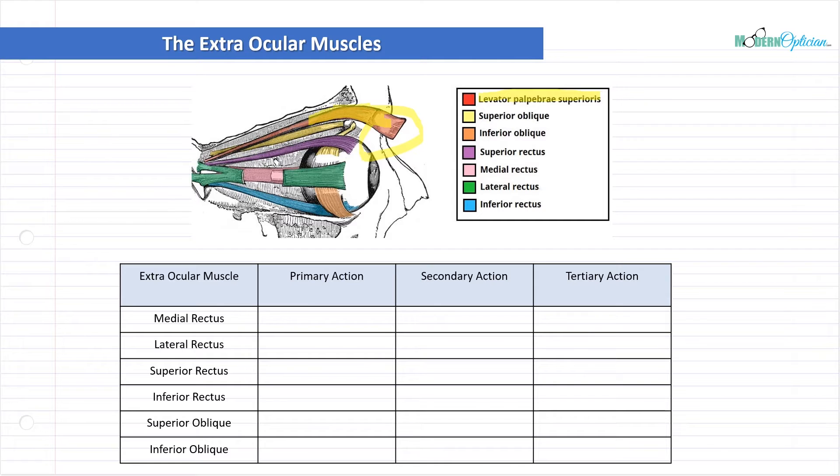The name of the muscle tells you where the attachment site is. Then you've got all the different actions. Memorizing all these different actions is not necessarily something you're going to want to spend a lot of time on. However, it does help you understand how these muscles work and contract to move the eye around.